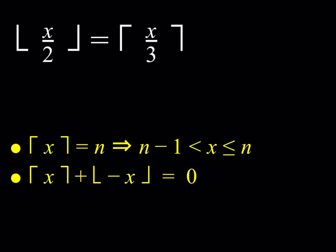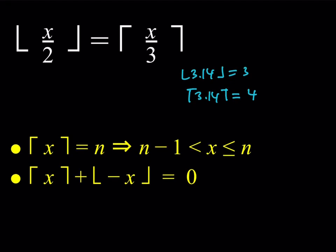The ceiling function is basically defined as the rounding up operation. With the floor value, we always round down — for example, the floor of 3.14 becomes 3. If you do the same thing with the ceiling, you're rounding up instead, so that gives you 4. The first bullet point says essentially the same thing, but be careful: with the floor, the lower value is always n, whereas with the ceiling it's n minus 1 — it's a little different.